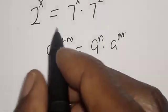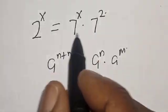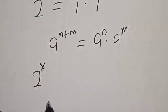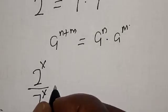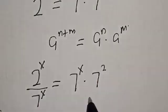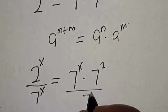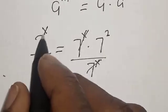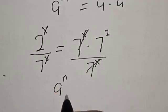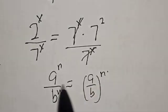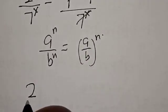Now we have 2 raised to power s and 7 raised to power s. Let's divide both sides by 7 raised to power s. That gives us 2 raised to power s divided by 7 raised to power s, equal to 7 raised to power 2. Using the rule that A raised to power n over B raised to power n equals the quantity A over B raised to power n, the left hand side becomes 2 over 7 raised to power s.